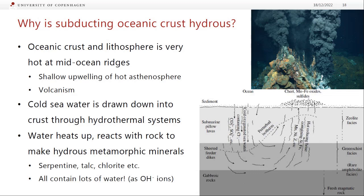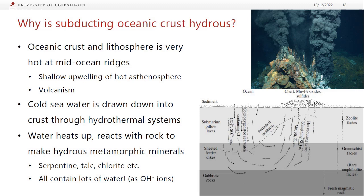Why are there so many hydrous minerals in the subducting oceanic crust? When oceanic crust forms at a mid-ocean ridge, it's very hot and we have magma chambers close to the surface. This sets up hydrothermal convection: cold seawater gets drawn down into the crust, reacts with it, strips it of metals, and makes hydrous minerals, then gets expelled to make black smokers — very hot metal-enriched fluids. The minerals left behind — talc, chlorite — contain a lot of water, mainly as OH⁻ ions.